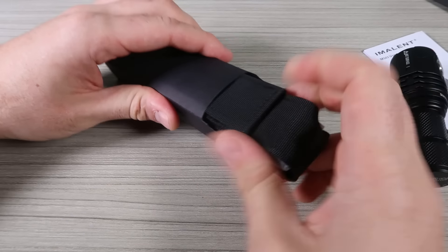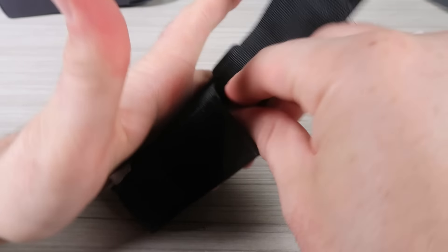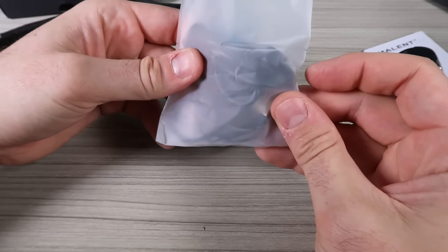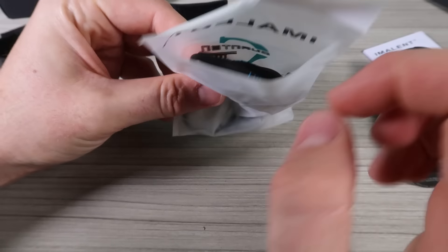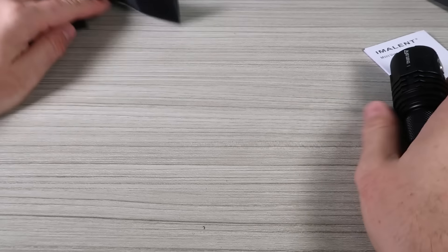Let's pull this out. This is a nice belt loop holder, and I think there'll be wires to recharge it. Looks like USB-C and a holder, a lanyard holder, USB-C to USB.